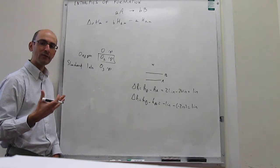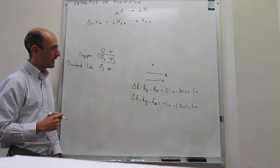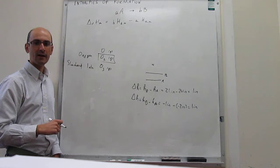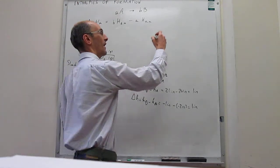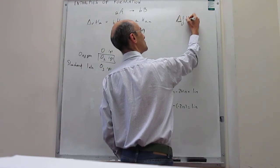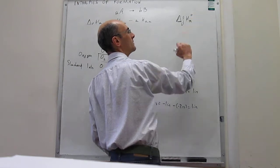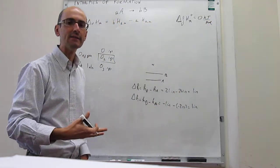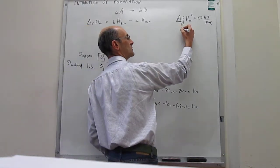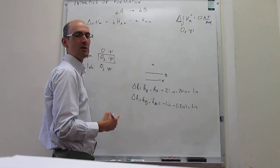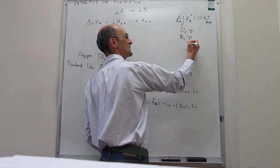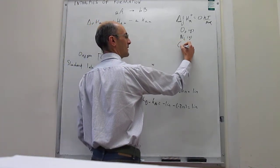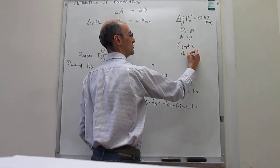By convention, we give this most stable allotrope of a pure element under standard conditions a value of 0 kJ/mol for the enthalpy of formation. So we construct a table where the standard enthalpy of formation is 0 kJ/mol by definition for the most stable allotropes of constituent elements. For oxygen, that will be O2; for nitrogen, molecular N2; for carbon, it will actually be graphite; for hydrogen, it will be H2 gas, and so forth. This is our reference zero — our sea level — for enthalpies.